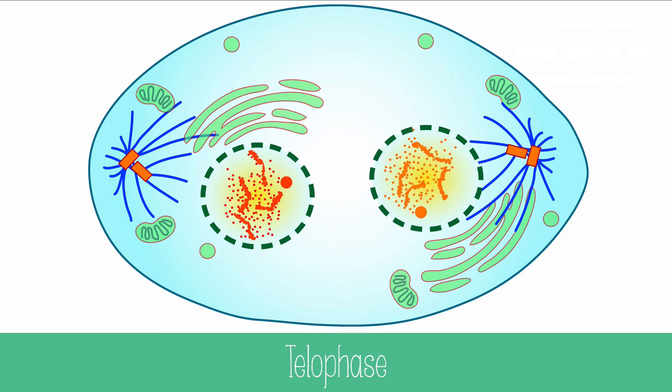In telophase, spindle fibers are disassembled, nuclear membranes reform, and the chromosomes uncoil into chromatin.